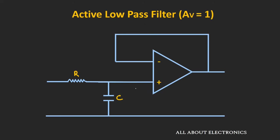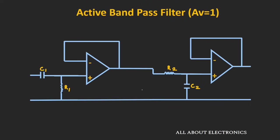Instead of using passive low pass and high pass filters, we can use active low pass and high pass filters. Just by cascading these two active filters, we can design the bandpass filter, and by using the op-amp as a buffer, we can isolate the two different stages. If we want gain from this active filter, we can configure the op-amp either in an inverting or a non-inverting configuration, achieving both stage isolation and gain.